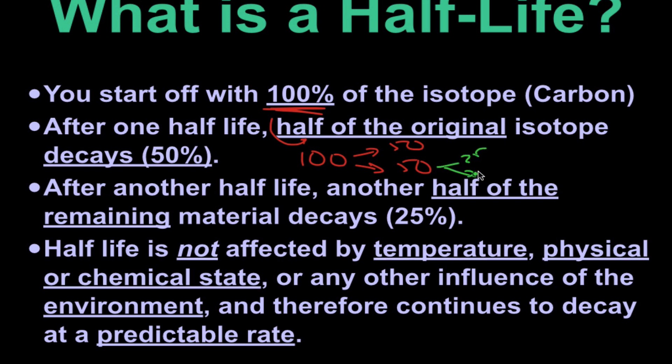It breaks down into 25 percent — by half again — and then from there it will break down by half again. You can see the progression from unstable into stable. The half-life is not affected by pretty much anything: not temperature, physical or chemical states, anything in the environment, or plate tectonics. Radioactive decay happens at a very predictable rate.